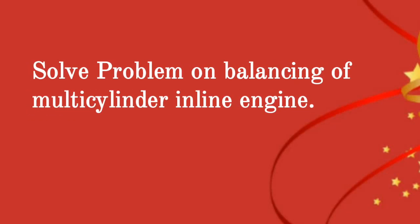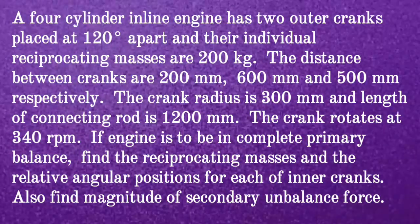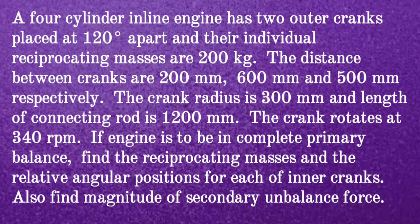We will solve one problem on balancing of a multi-cylinder inline engine. A 4-cylinder inline engine has two outer cranks placed 120 degrees apart, and their individual reciprocating masses are 200 kg. The distances between the cranks are 200 mm, 600 mm, and 500 mm respectively. The crank radius is 300 mm, the length of the connecting rod is 1200 mm, and the crank rotates at 340 RPM. If the engine is to be in complete primary balance, find the reciprocating masses and relative angular positions for each of the inner cranks, and also find the magnitude of the secondary unbalanced force.